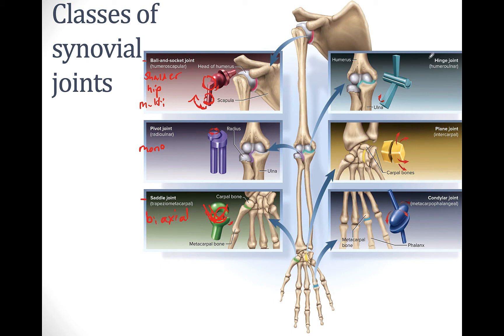The fourth class of joints is the hinge joint, which functions just like you'd expect — like a hinge. A hinge is mono-axial, only able to move in one direction. Examples of this include the elbow and the knee.